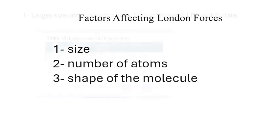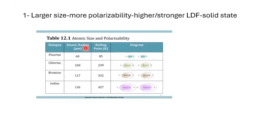This table shows the boiling point of halogens increases down the group. The reason is that atomic radius increases down the group. When the atomic radius increases, the outer electrons are far from the nucleus, so a temporary dipole is generated very easily. That creates more attraction and a stronger IMF, therefore a higher boiling point.